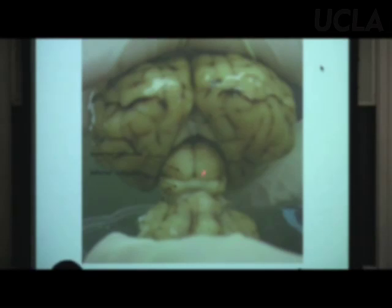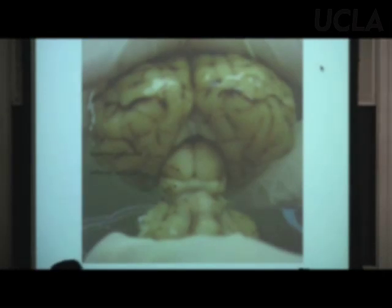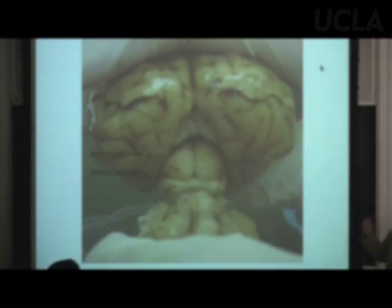We also see the superior and inferior colliculus, which are in the mesencephalon. If I stick a pin in the inferior colliculus and ask where the cell bodies project from, the answer is the superior olive — the lateral lemniscus carries those axons. And the inferior colliculus projects to the medial geniculate.